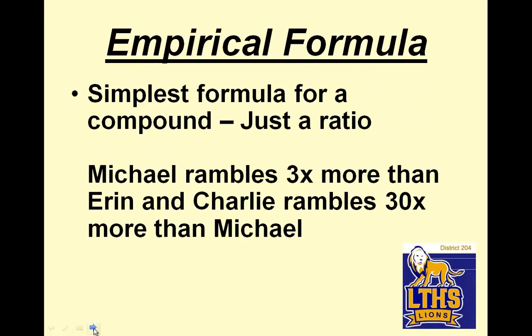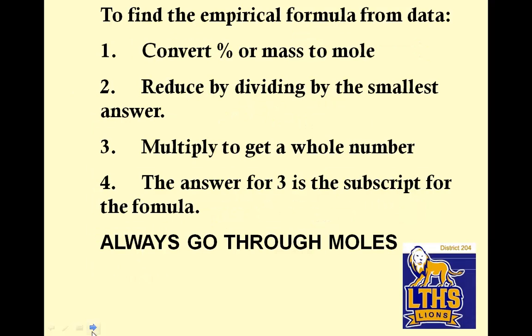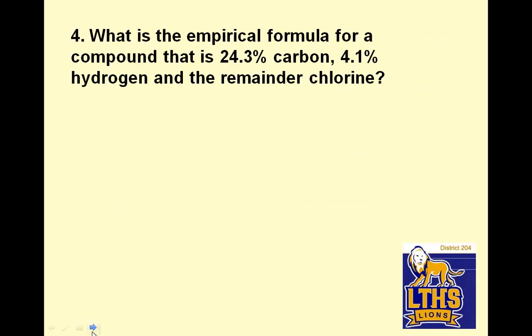Empirical formula. Simplest formula for a compound. It's just the ratio. It's the reduced ratio, just a reduced ratio. Michael rambles three times more than Aaron, and Charlie rambles 30 times more than Michael. That would look like M3E1C30. It's reduced. There's, I couldn't divide these things. If this was a three as well, I could divide everything by three, but I don't. To find the empirical formula from that data, by the way, our goal is to get into moles. I'll let you copy that down if you need to, but I'm going to try and get into whole moles and wiggle into whole numbers.